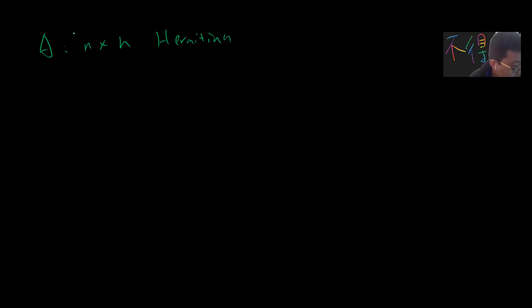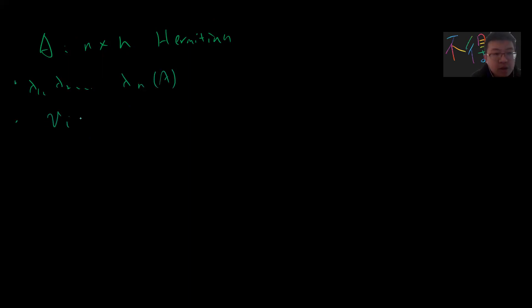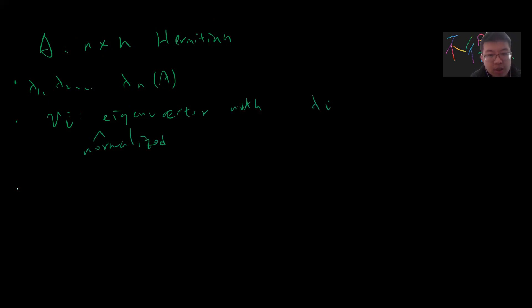So in order to prove this, let me just write down everything. So suppose A is an n-by-n Hermitian matrix. Why Hermitian? Because we will need to use spectral decomposition. And let's say lambda 1, lambda 2, up to lambda n are eigenvalues, and v_ij is the eigenvector — normalized — with respect to lambda i, and v_ij is the j-th component of the i-th eigenvector.